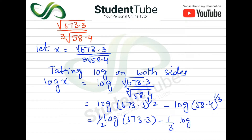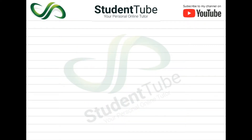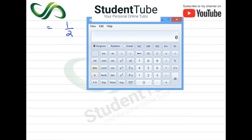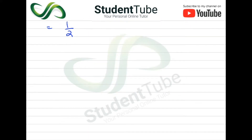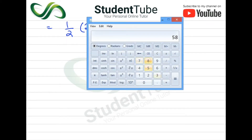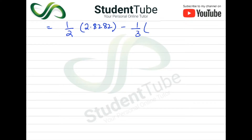आगे solve करते हैं। (1/2) log 673.3 — log 673.3 की value है 2.8282. Then minus (1/3) log 58.4 — log 58.4 की value है 1.7664.